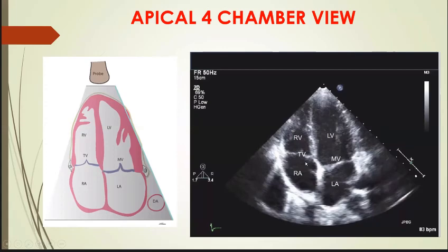This is the inter-atrial septum. Any pathologies in these two valves — like mitral stenosis, mitral regurgitation, tricuspid stenosis, tricuspid regurgitation — any congenital defects or other acquired defects can be easily noticed in this view.